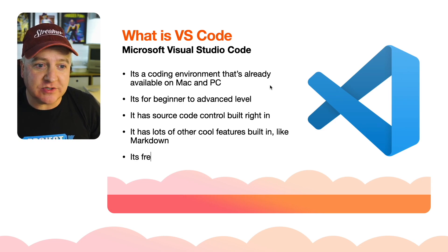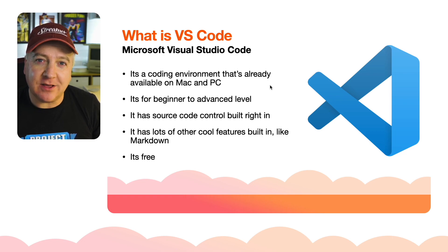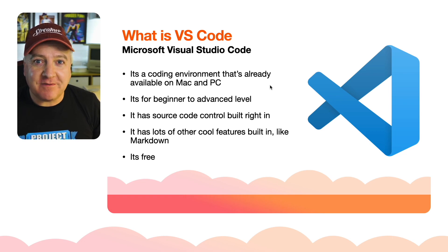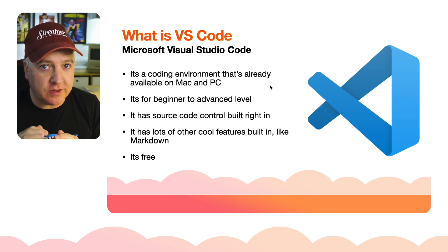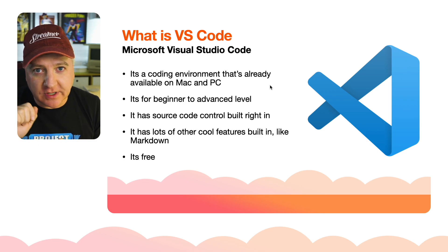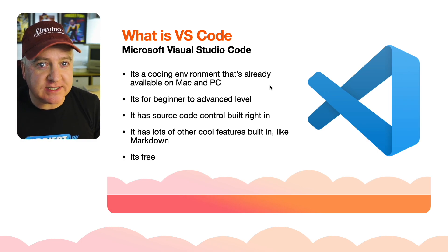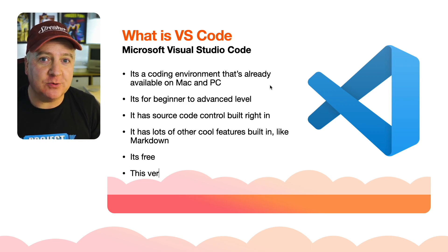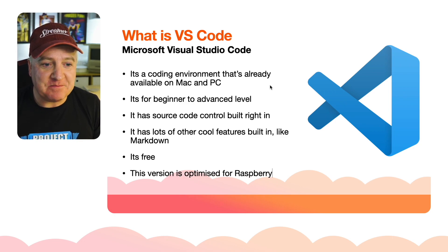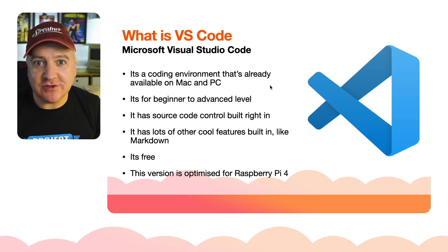Features include Markdown support, and a thing called linting, which helps you write really nice clean code by giving you little hints and tips — it'll underline errors in red or suggest improvements. The other cool thing is it's free, not a penny, and this version is optimized for the Raspberry Pi 4.